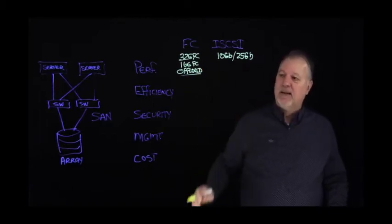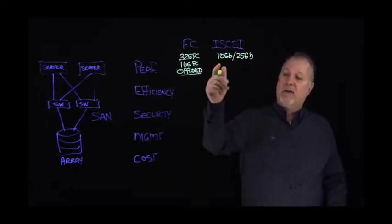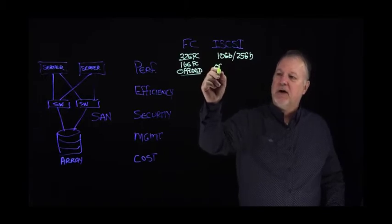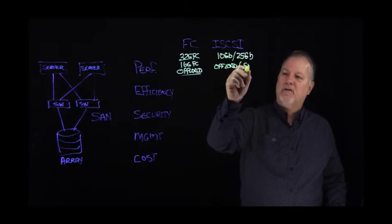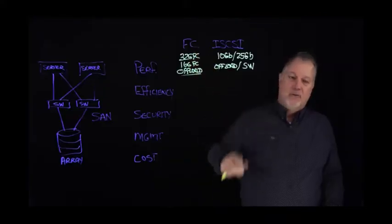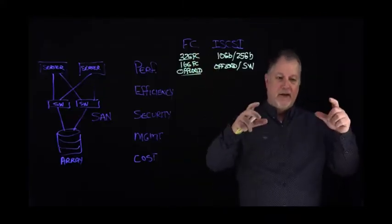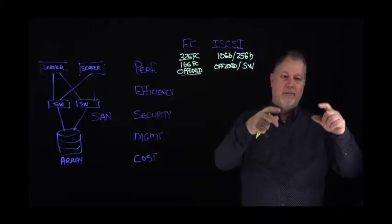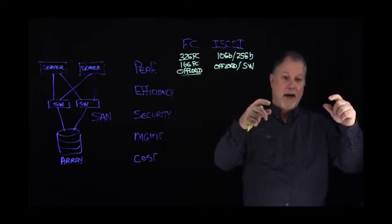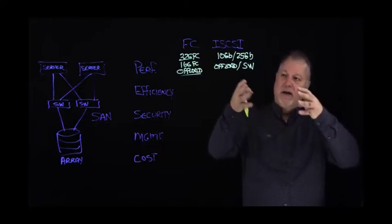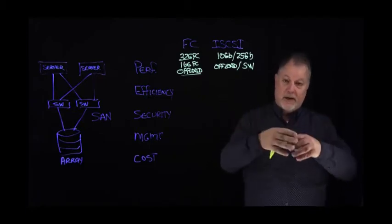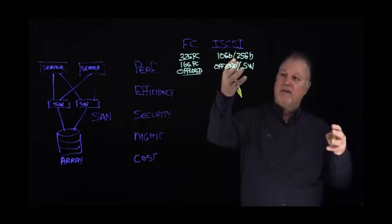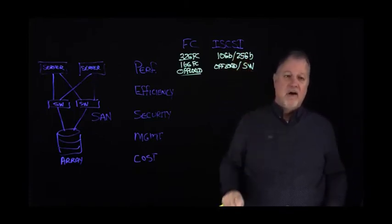iSCSI, we have a choice between offload or what's called software iSCSI. So with iSCSI, the offload is very similar to Fiber Channel: take the storage data from the PCI bus, put it in the TCP/IP packet. All of that processing is done on the CNA or the Converged Network Adapter. Alternatively, I can use a standard NIC, a standard 10 gigabit or 25 gigabit NIC, and use software initiators.